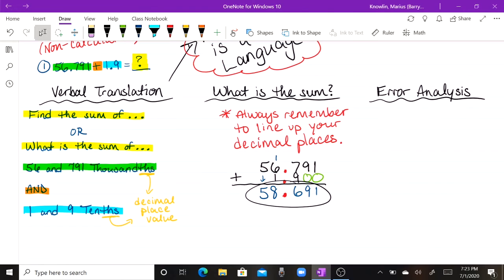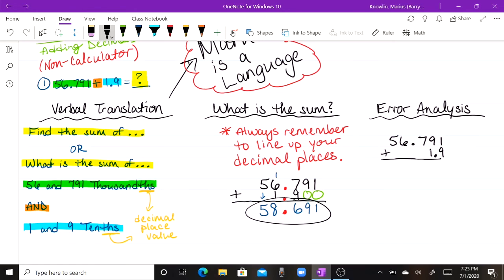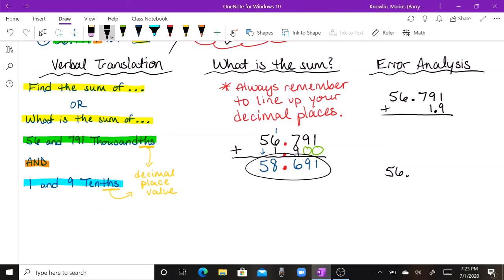Now, let's go ahead and jump into an error analysis discussion real quick, briefly. And the main error here is going to come from people not doing what? Not lining up their decimal places properly. So I'm going to show how that one mistake can lead to two different errors. 56 and 791 thousandths plus 1 and 9 tenths. And some of you probably can already tell what the two mistakes are going to be or the two possible mistakes. It's going to be because when you don't line the decimal place values up properly, when you don't line them up properly, you don't know where to put the decimal for the final answer. So let's take a look at this.